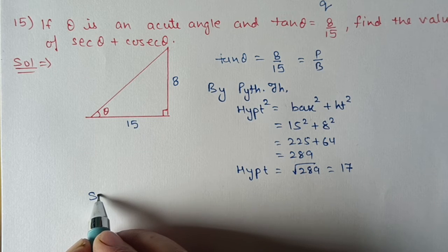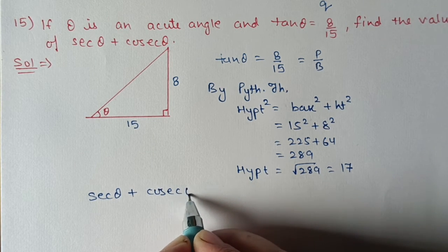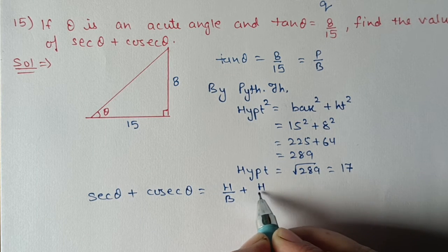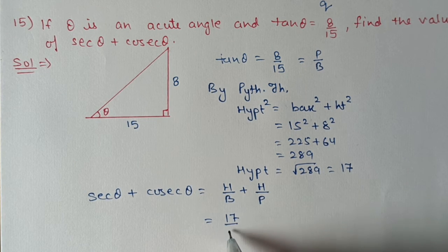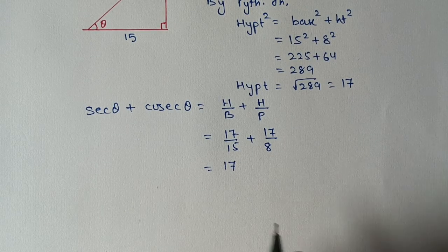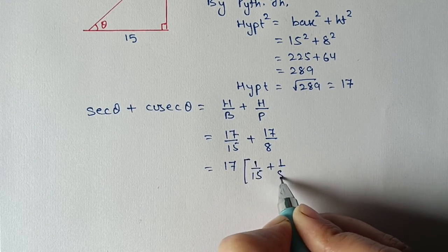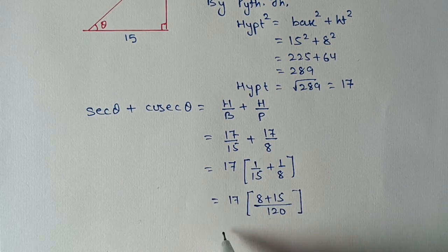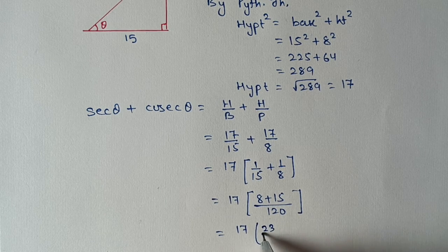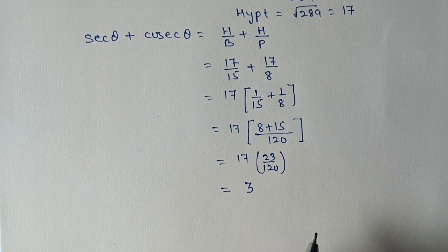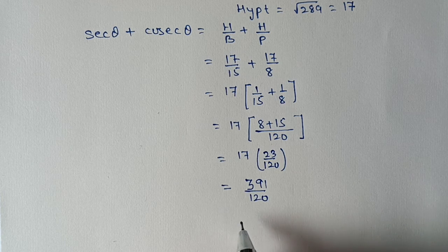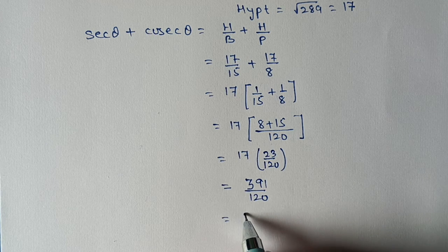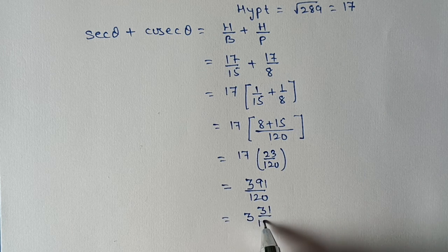Now we find sec θ plus cosec θ. sec θ is hypotenuse by base and cosec θ is hypotenuse by perpendicular: 17 by 15 plus 17 by 8. Taking 17 as common, we get 17 times (1 upon 15 plus 1 upon 8). Taking LCM 120: 17 times (8 plus 15) upon 120 equals 17 times 23 upon 120, which gives 391 upon 120. As a mixed fraction, the answer is 3 whole 31 upon 120.